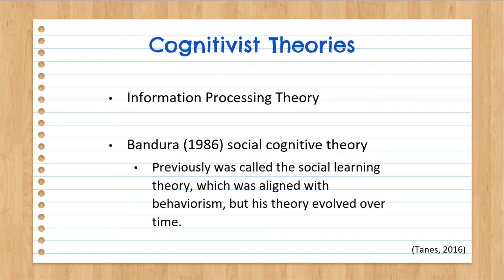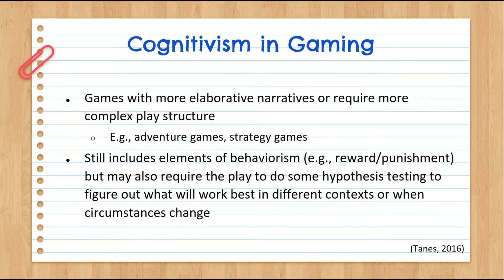Later, he renamed the theory social cognitive theory, and in doing so he also emphasized the concept and role of cognition and environment. Within social cognitive theory, the individual is triangulating between personal factors — cognitive, affective, and biological events — environmental factors, and behavior in the learning process. Cognitivism was also mentioned in our article on gaming.